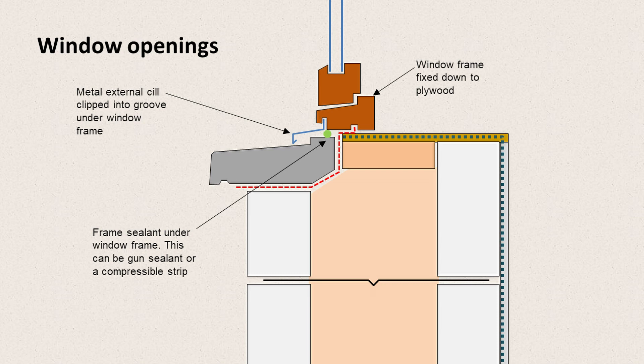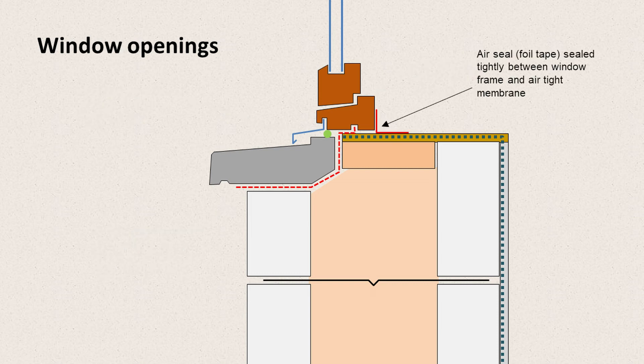To the underside of the frame there is a little metal sill, usually aluminium, that clips into a groove in the window frame. That would all sit down onto the plywood, fixed back through to the plywood with screws. The underside of the frame where it meets the concrete sill would be sealed with a gun sealant or a compressible strip. To form an airtight seal against the plywood and the window frame you can fit a metal foil tape — it's very sticky and it seals the gap between the window frame and the airtight plywood.